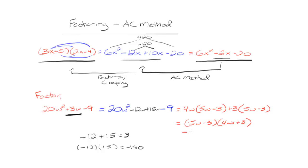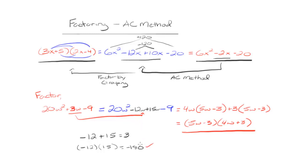This expression is the final factored version of our original statement. We took the middle term and split it into negative 12w plus 15w, choosing negative 12 and 15 because they multiply to negative 180 and add to 3 — the coefficient of the middle term. Once we did that, we factored each group separately using factor by grouping, finishing with our final factored form.